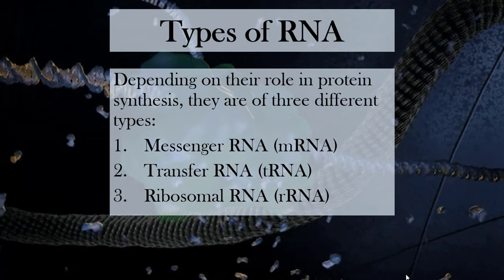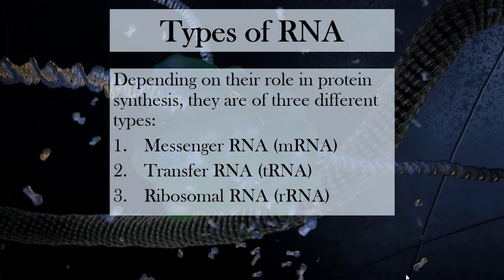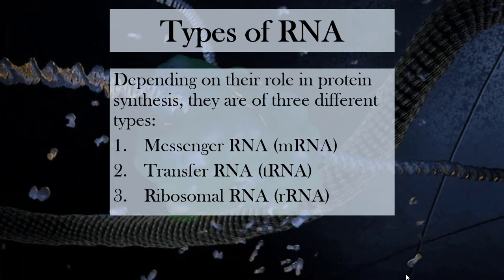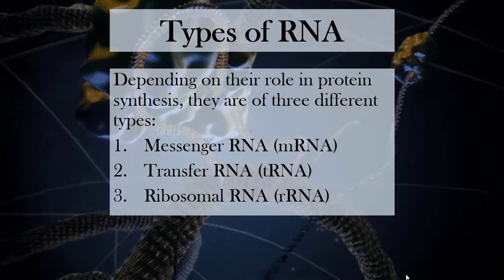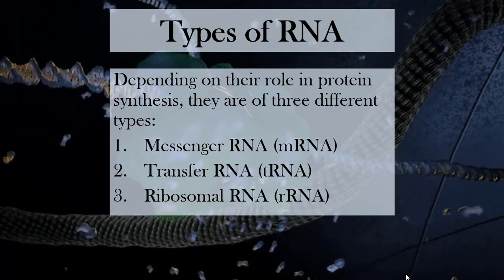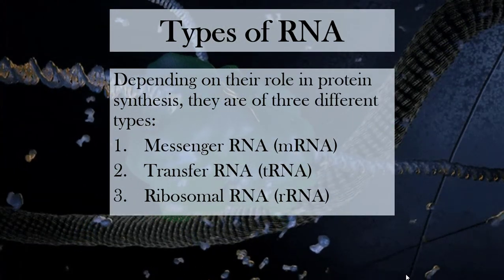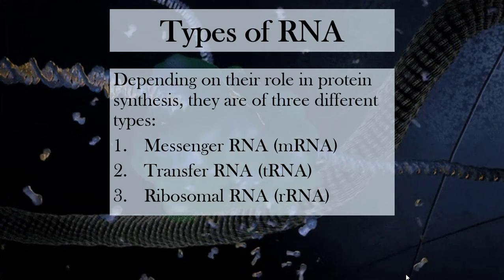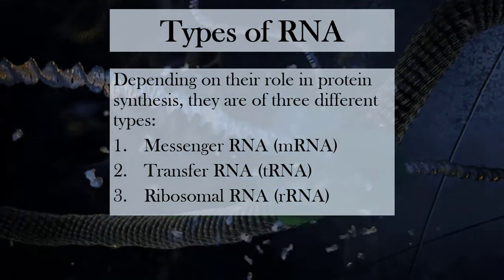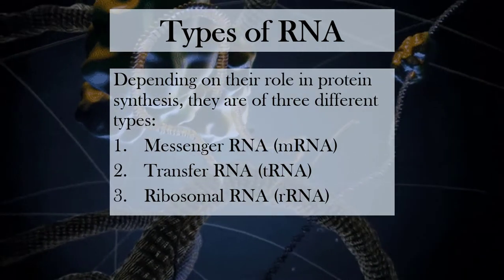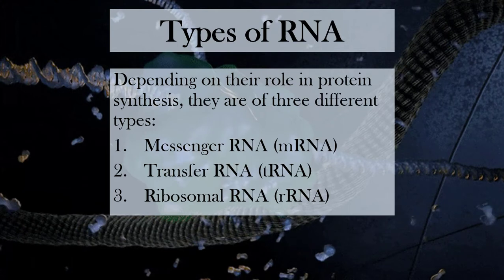Now we are going to see the types of RNA. There are 3 types of RNA, based on their role during protein synthesis. The first one is messenger RNA, the second one is transfer RNA, and the third one is ribosomal RNA.